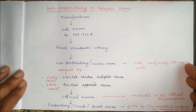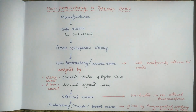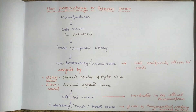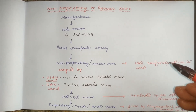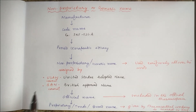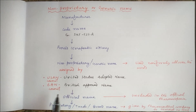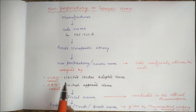Now the non-proprietary or generic name is the name which is universally accepted and used uniformly all over the world. The manufacturer initially gives a code name to a molecule, and once there is proved therapeutic efficacy, a generic name or non-proprietary name is given. It is assigned by two councils: the USAN council and the BAN council. USAN stands for United States Adopted Name, and BAN stands for British Approved Name. Sometimes both are the same, and there may be slight differences in the nomenclature given by USAN and BAN.